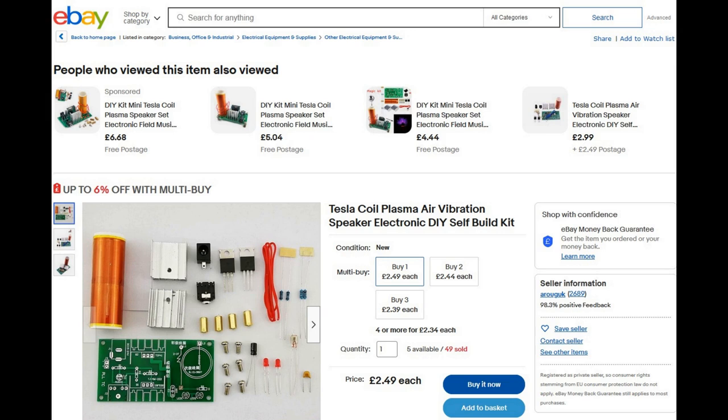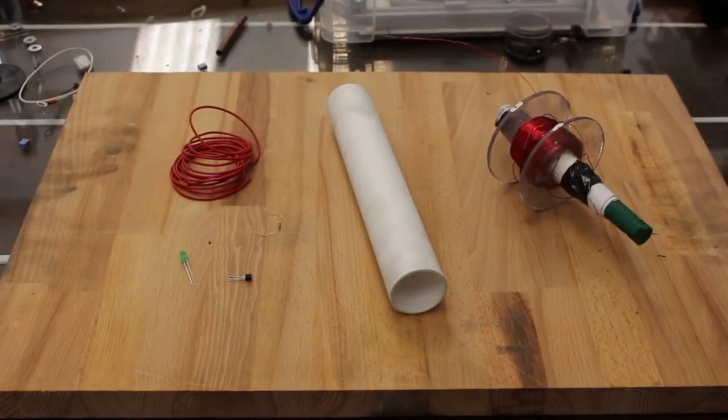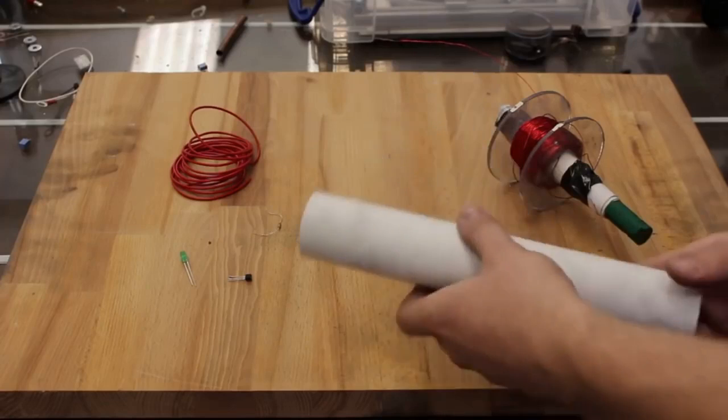If you want to, you can buy a Slayer Exciter kit on the internet and they're pretty reasonable prices. But they are stunningly easy devices to build from your own components you might have lying around or you might have scavenged.